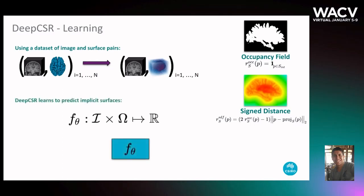Then, we train a neural network to map from an image and a point in real coordinates to its implicit surface representation.